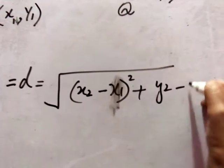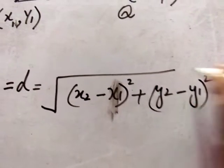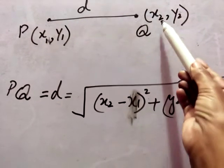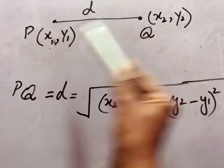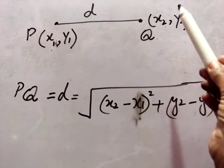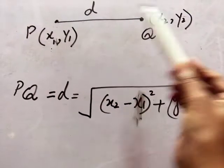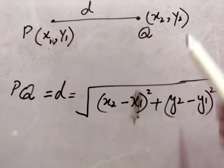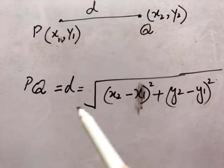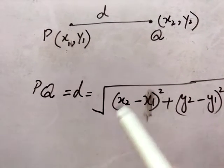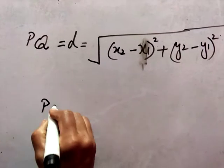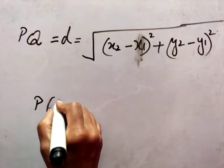plus Y2 minus Y1 whole square. So the distance PQ equals the square root of (X2 minus X1) squared plus (Y2 minus Y1) squared. First we subtract the X coordinates, square the result, then add the squared difference of the Y coordinates, and take the square root. This is the formula for finding the distance between two points P and Q, denoted by D.